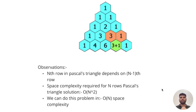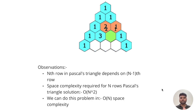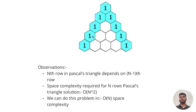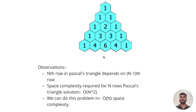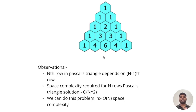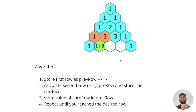Now let's look at some patterns in this problem. From the N rows Pascal's Triangle problem, we already know that the nth row depends on the (n-1)th row — we can calculate all elements in the nth row using the elements of the (n-1)th row. We also know that the space complexity for N rows of Pascal's Triangle is O(n²), but in this problem we just need to return the nth row, so we can reduce that space complexity from O(n²) to O(n) after some optimizations.